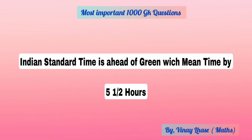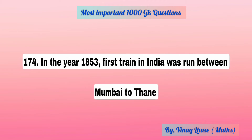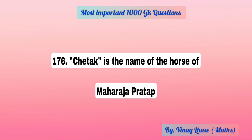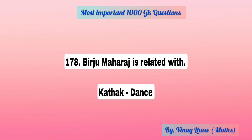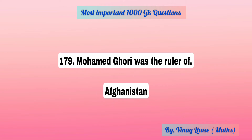Indian Standard Time is ahead of Greenwich by 5.5 hours. In the year 1853, the first train in India was run between Mumbai to Thane. Chetak is the name of Maharana Pratap's horse. Who is known as Nishani Pakistan? Maharaji Desai. Birju Maharaj is related with Kathak, a dance form. Mohammed Ghori was ruler of Afghanistan.